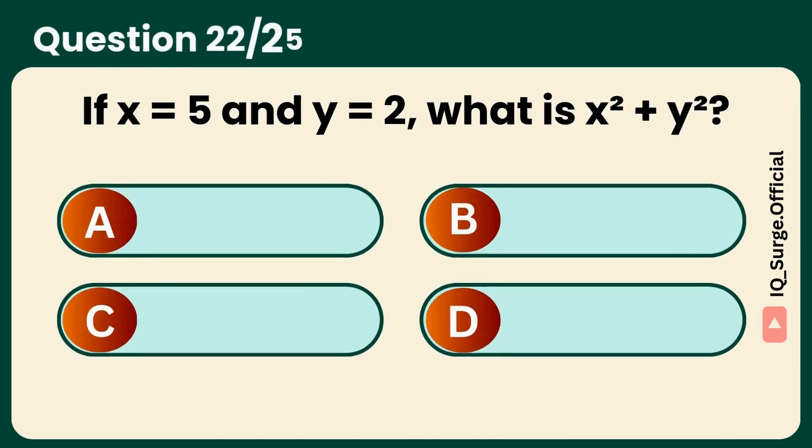If x equals 5 and y equals 2, what is x squared plus y squared? Answer: 25 plus 4 equals 29.